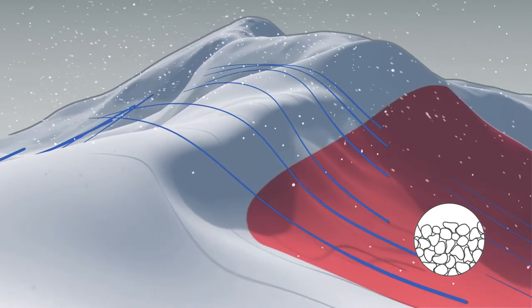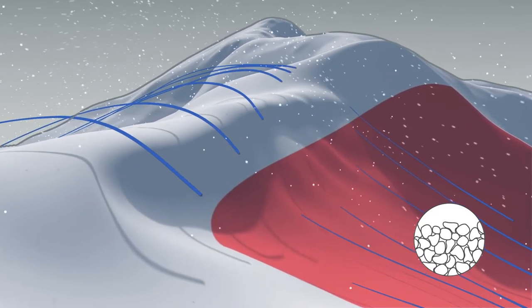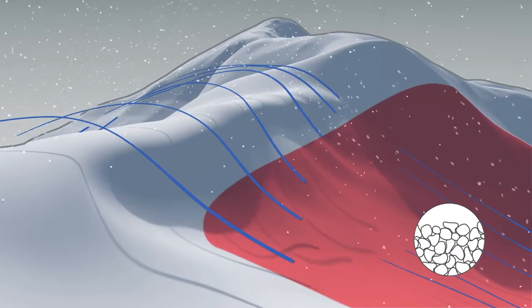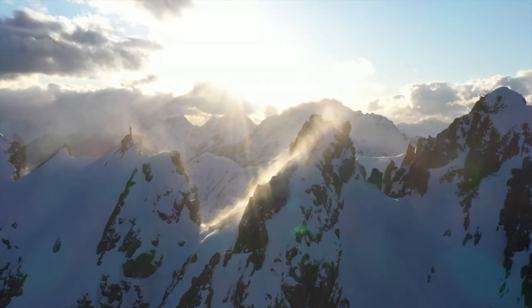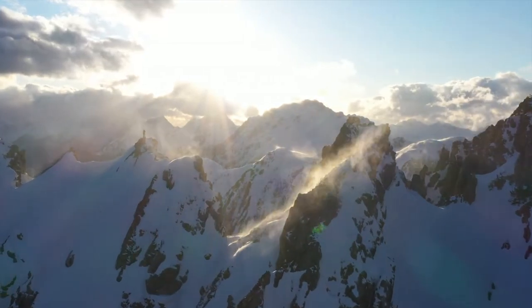You need to ask yourself: how old is the wind-drifted snow? Has it perhaps already healed? And how precarious was the old snow surface that the wind-drifted snow was deposited on? As a rule, the wind-drifted snow problem is over after one to three days, depending of course on whether the wind persists or dies down.